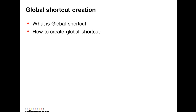Now, what is a global shortcut and how do we create one? A global shortcut is a shortcut in a local repository that references an object in a global repository. We can create a global shortcut in any folder in the local repository. After creating the global shortcut in a folder, we can reuse it in that folder just like any other repository object.